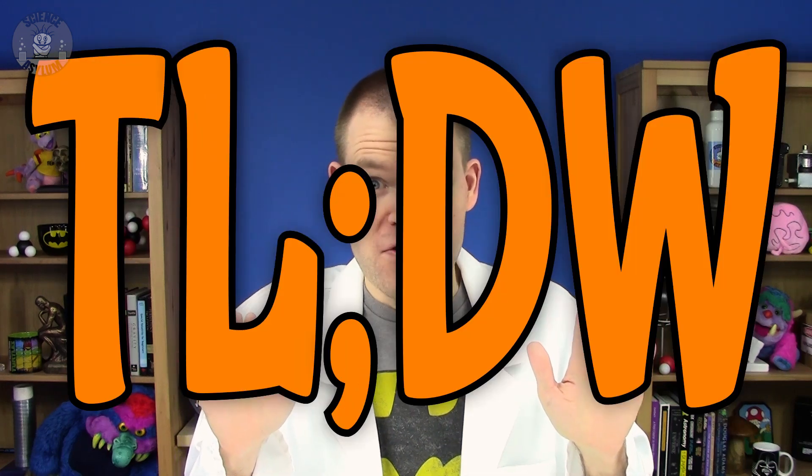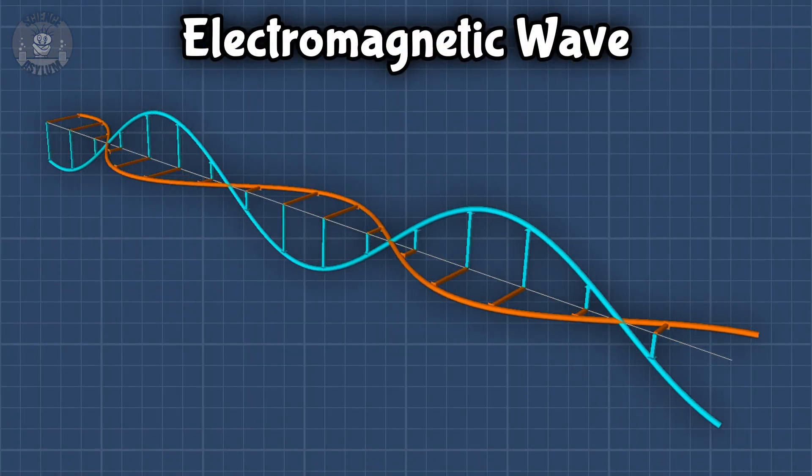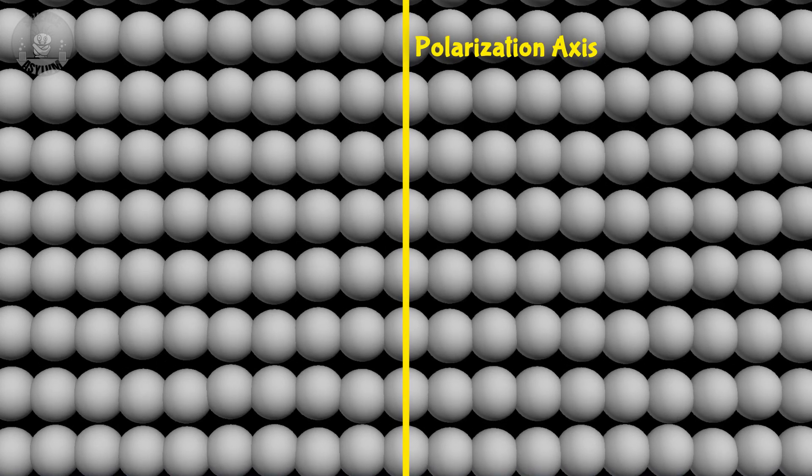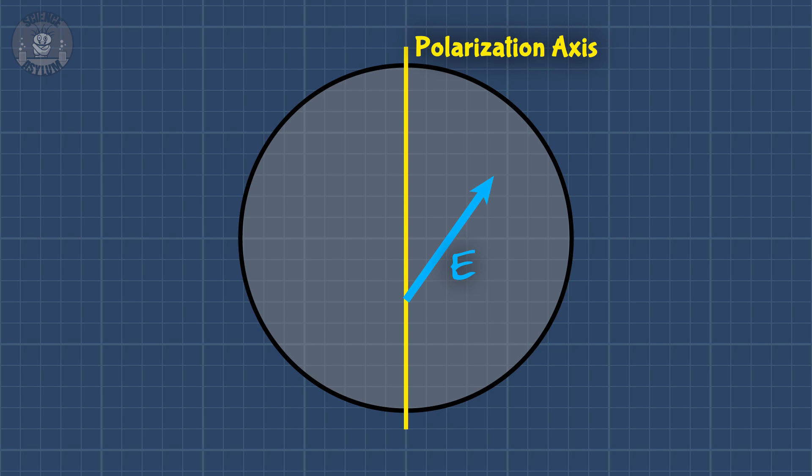If you haven't watched the other video yet, that's okay. Here's the too long don't watch version. Light is an electromagnetic wave. Its electric part is called its polarization. The polarizing material in sunglasses has molecules that can only wiggle in one direction, its polarization axis. Only the light that lines up with that axis will pass through the polarizer. The rest is absorbed as thermal energy.